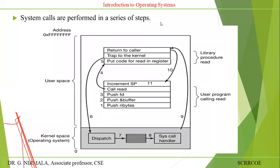System calls are performed in a series of steps. Consider this memory layout: you have the user space and kernel space. The kernel space allocates the OS, with addresses from 0 to FFF for a 64-bit computer. There is a dispatch module and system call handler. Step one: push n bytes — pass some values to that particular system call. Step two: push n buffer — those byte values will be stored in the registers.